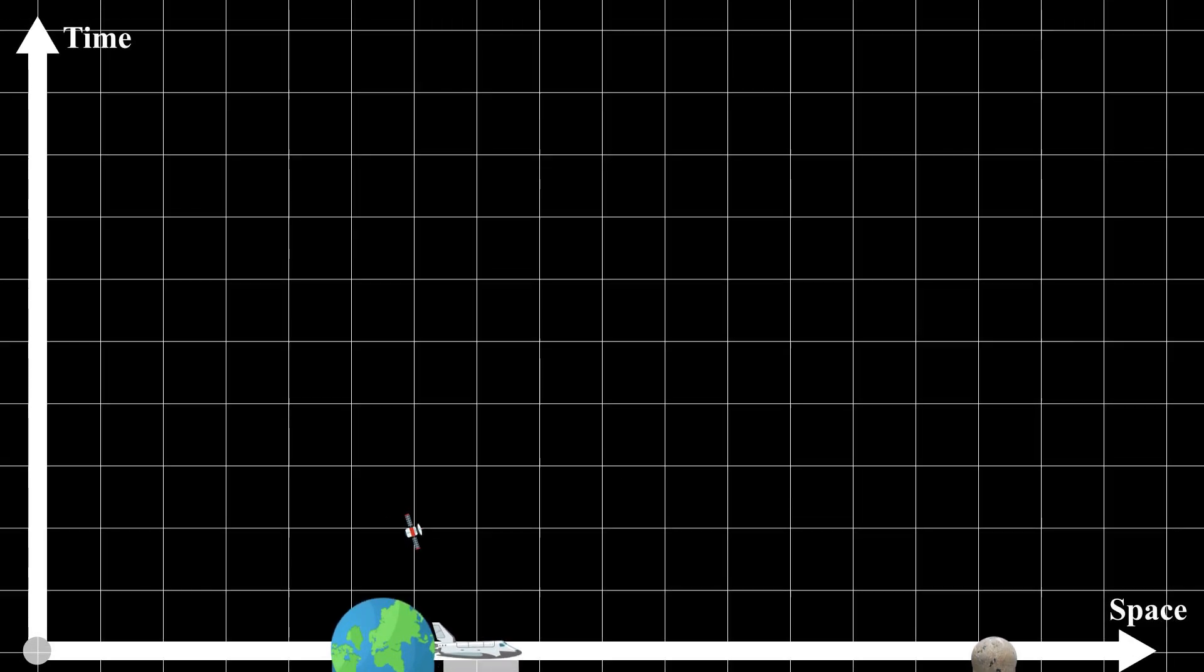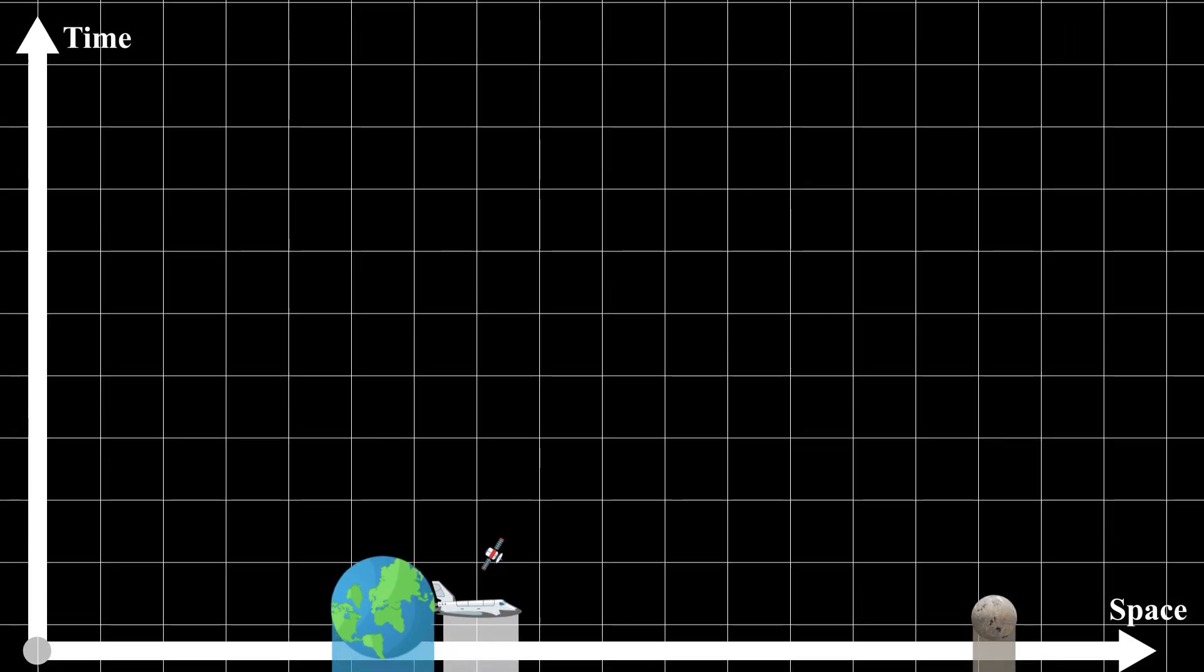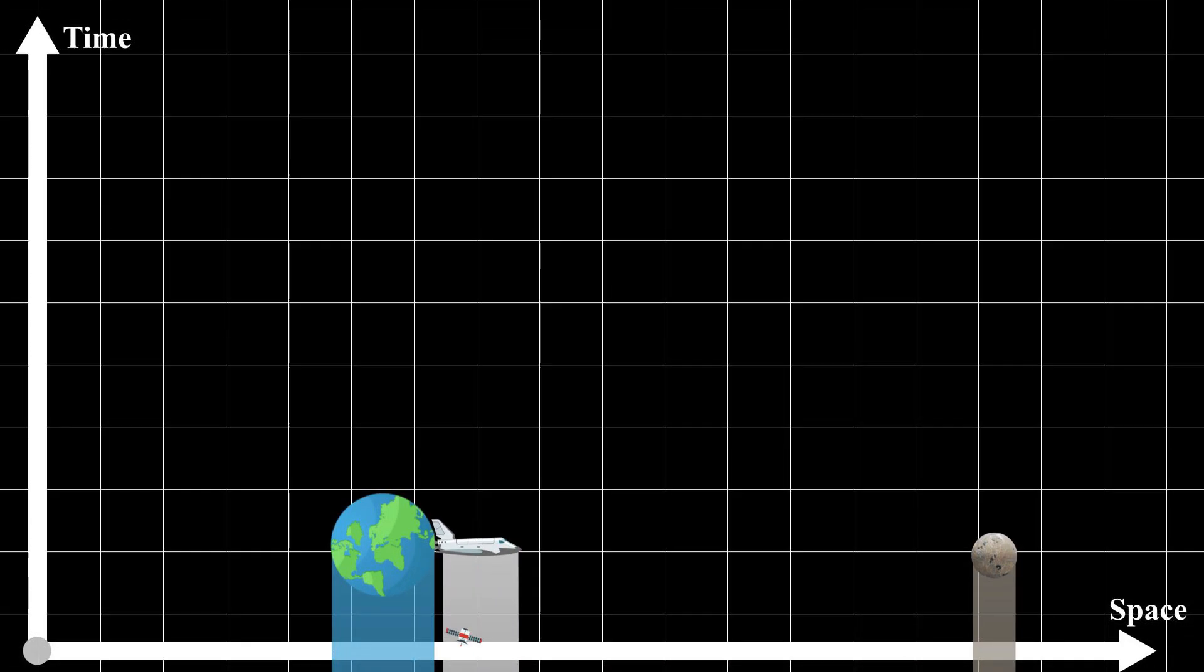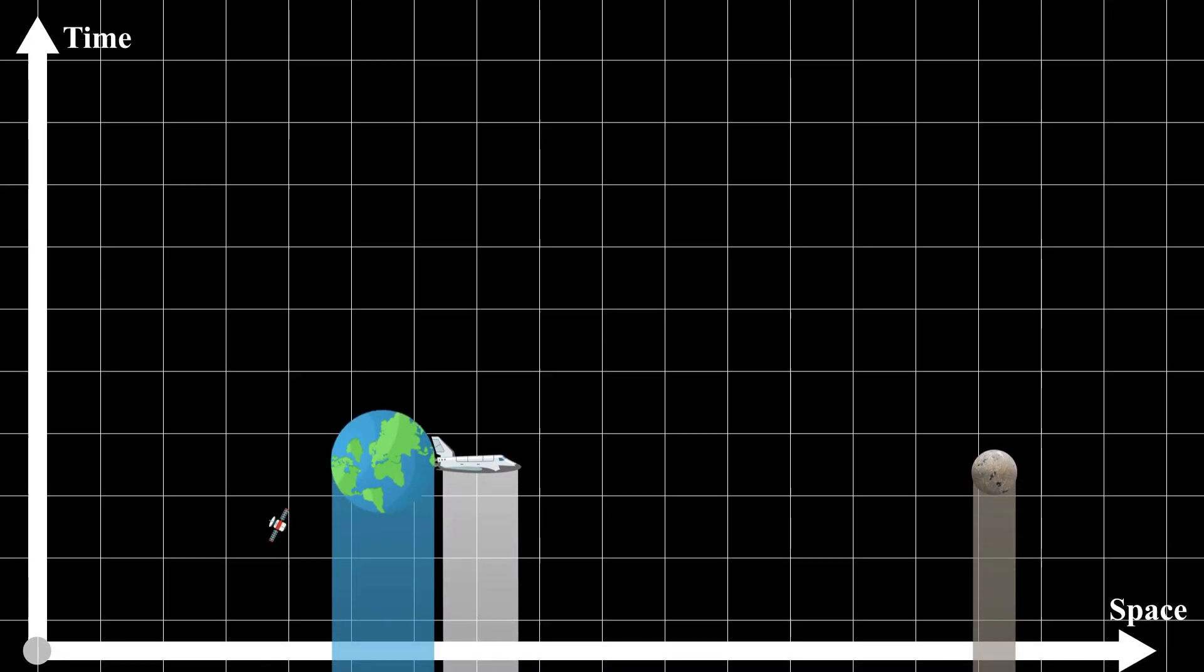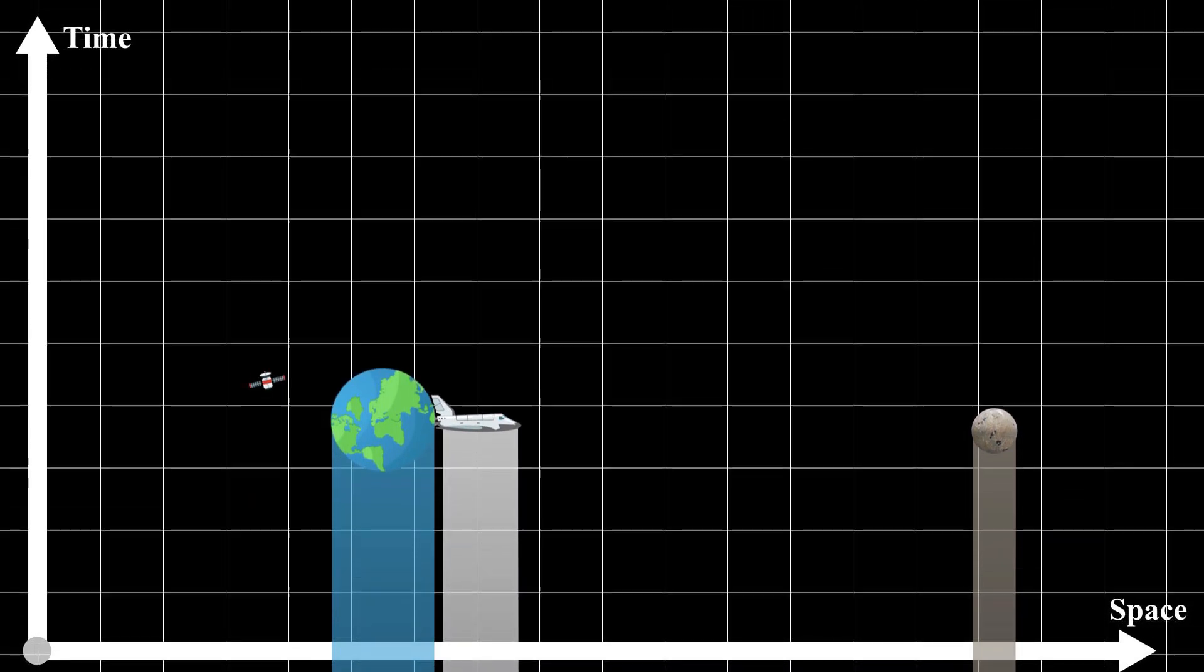Before takeoff, the spacecraft is stationary relative to the Earth. If we choose Earth as the reference frame and draw their world lines on the spacetime diagram, then both of them will only move through the time dimension.